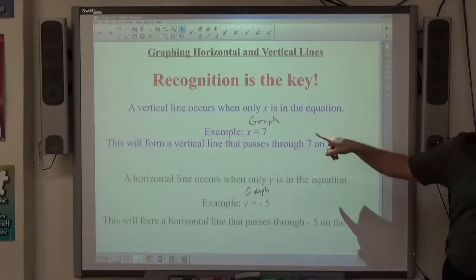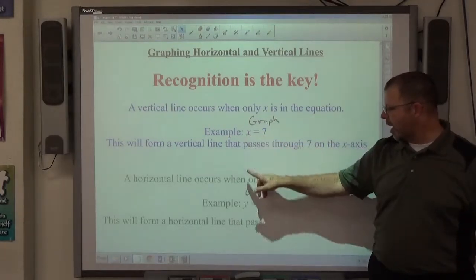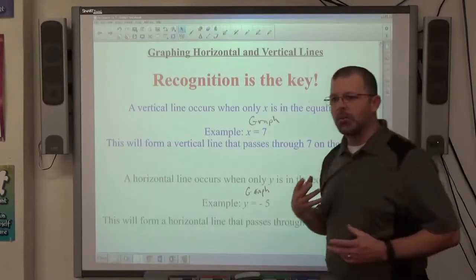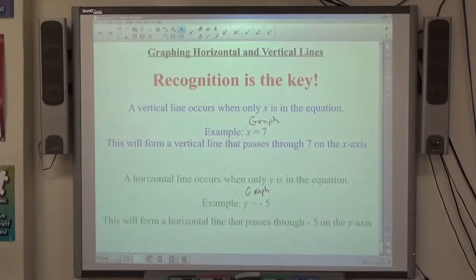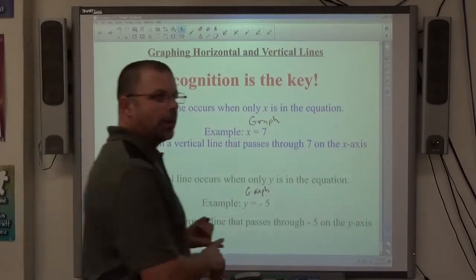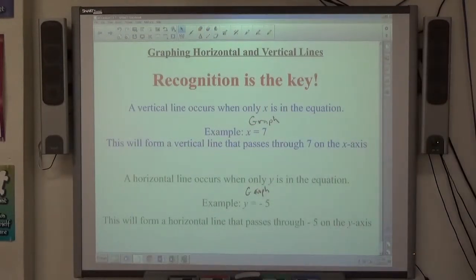Notice these equations. This has x but no y, this has y but no x. We just figured out that if there's both an x and a y, we get slanted lines. So if there's only x or only y, we get a vertical or horizontal line.